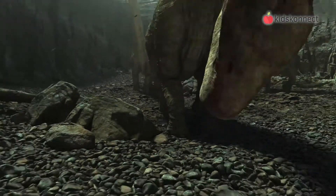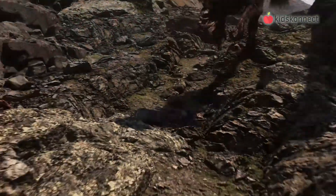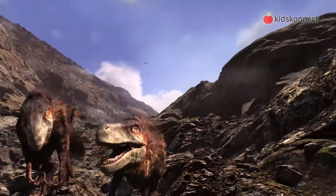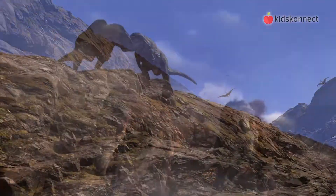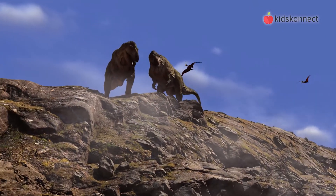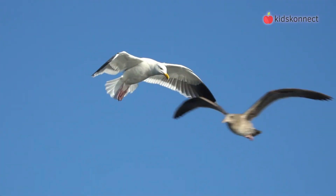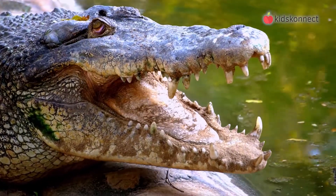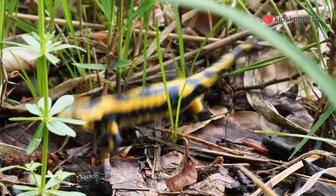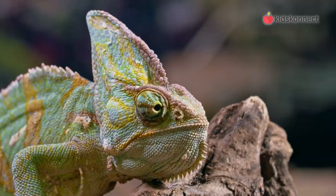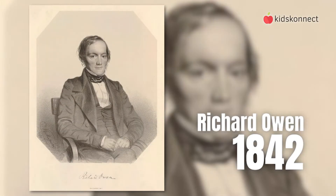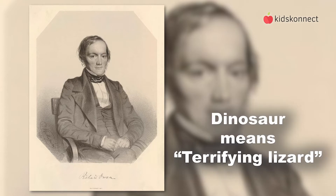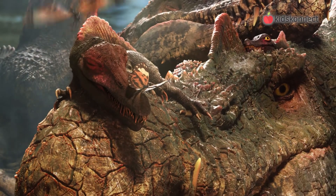Dinosaurs roamed the earth over 200 million years ago, and were the dominant terrestrial vertebrate for 135 million years. There are around 330 species known to science, and their modern ancestors include birds, crocodiles, and reptiles like salamanders, lizards, and turtles. The name dinosaur was invented by Sir Richard Owen in 1842, and it means terrifying lizard. Before people knew what dinosaurs were, some cultures believed dinosaur bones were dragons.